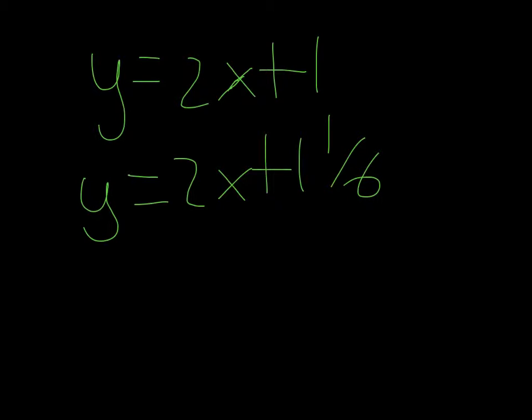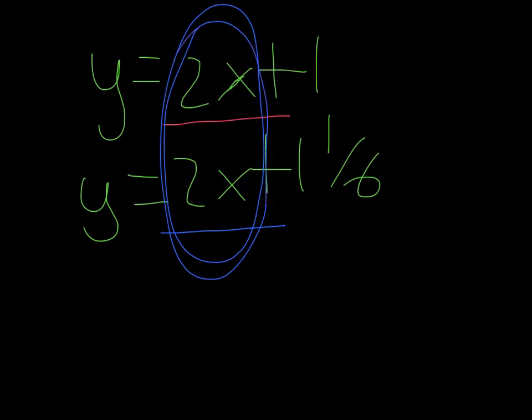So let's take a look at both of their slopes. So the slope of the first line is 2x, and the slope of the second line is 2x. So that means these two lines are parallel.